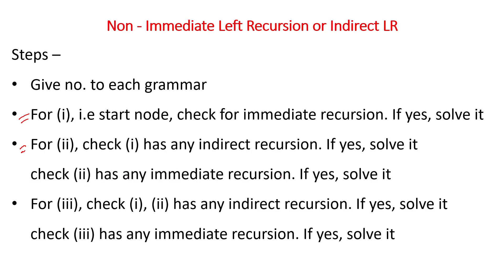If there are three grammars, we check the first two for indirect recursion. For the last one, we always check for immediate recursion. The simple rule is: no matter how many grammars are given, we check the last one for immediate recursion and all the ones before it for indirect recursion.